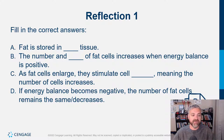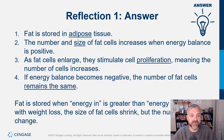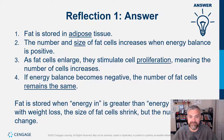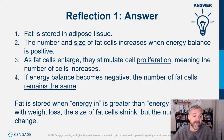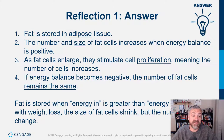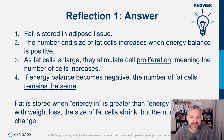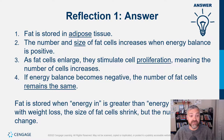Reflection one: Fat is stored in adipose tissue, and the cells that make up fat tissue are called adipocytes. The number and size of fat cells increases when energy balance is positive. The increase in size is a problem because you're gaining fat, but the increase in number is the real problem — as fat cells enlarge, they stimulate cell proliferation, that fat cell hyperplasia. If energy balance becomes negative, the number of fat cells remains the same — you probably don't lose them at all; it appears to take at least 10 years to lose extra fat cells.